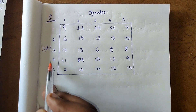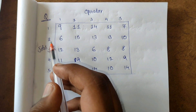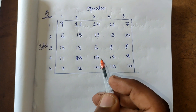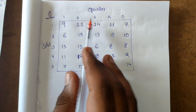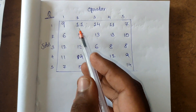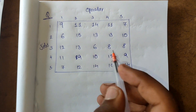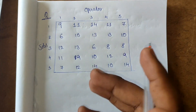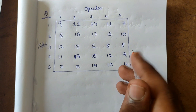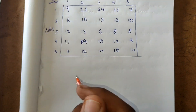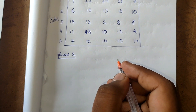Here we have jobs and operators, and we need to assign jobs to the operators. First, we need to check if the matrix is balanced — the number of rows should equal the number of columns. Here we have five rows and five columns, so the matrix is balanced. If it were not balanced, say four rows and five columns, we would simply add a fifth row with all zeros. Now we proceed to phase one: row and column reduction.